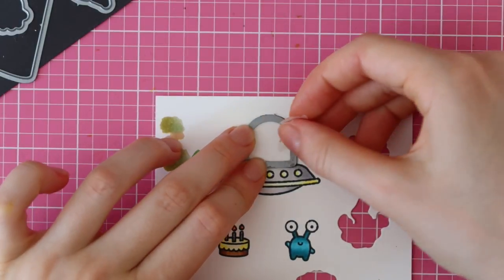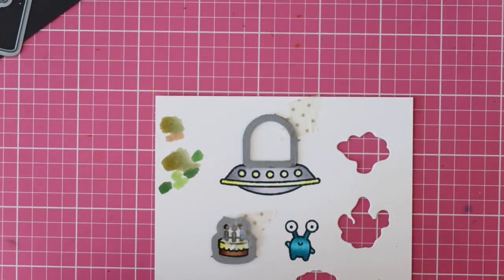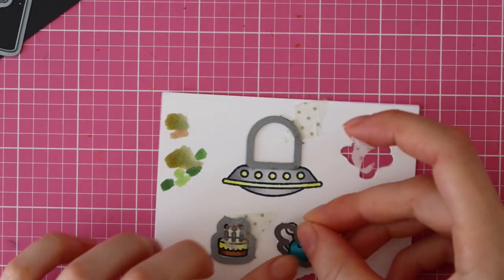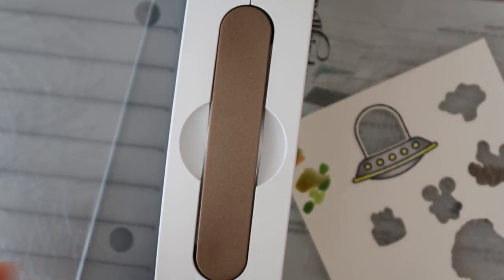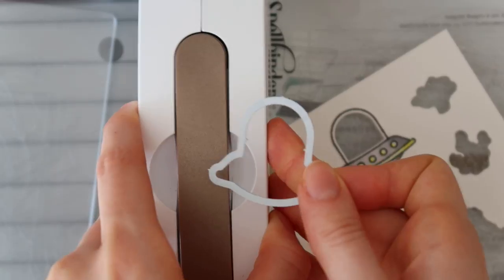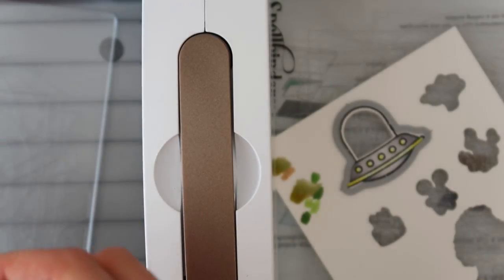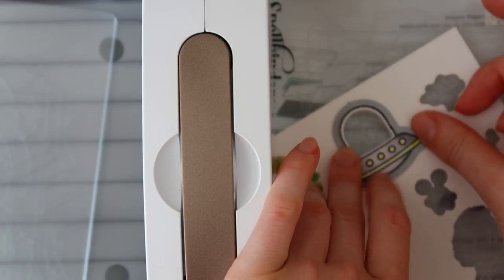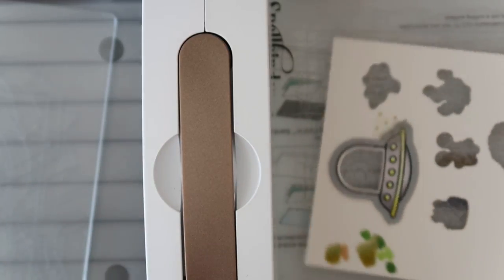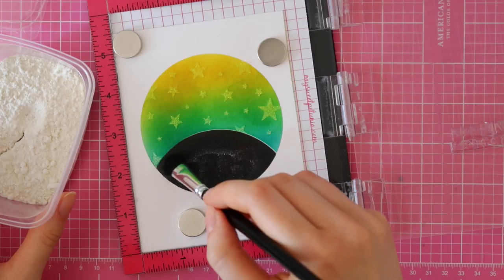I'm also using the coordinating dies of the Beam Me Up stamp set to die cut these images. I really like this die set because the spaceship image has two dies. First, I'm using the little frame to die cut the center of the spaceship, and then I can use the outline of it. This just makes sure that you can add a little image inside your spaceship. And in this case, I'll be using the tiny alien for it. I think it's a really fun and clever design. I am temporarily adhering my dies with some washi tape while die cutting.